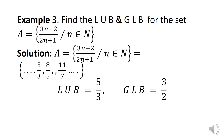The next problem: find the LUB and GLB for the set A = {(3n + 2)/(2n + 1) : n ∈ N}. When N = 1, we get (3 + 2)/(2 + 1) = 5/3; when N = 2, we get 8/5; when N = 3, we get 11/7; and so on. So A = {5/3, 8/5, 11/7, ...}. The least upper bound is 5/3 and the greatest lower bound is 3/2.